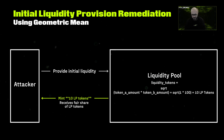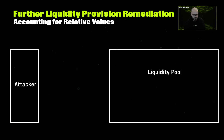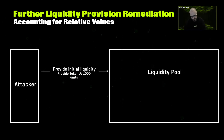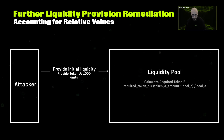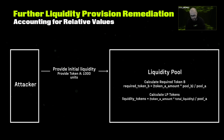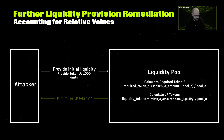For the second issue — further liquidity provision — the system was not accounting for the relative values of the tokens composing the LP pool. When depositing, it was only considering the token being added without considering the other token that also exists in the pool. When you add liquidity to an existing pool, you should calculate how much of the other token you need based on the current ratio of tokens in the pool. The LP tokens you receive will then match your share of what you've added compared to the total liquidity in the pool, ensuring your ownership is fair compared to other participants. We also recommended changing the formula used to calculate the LP tokens to be minted and proposed the correct one.